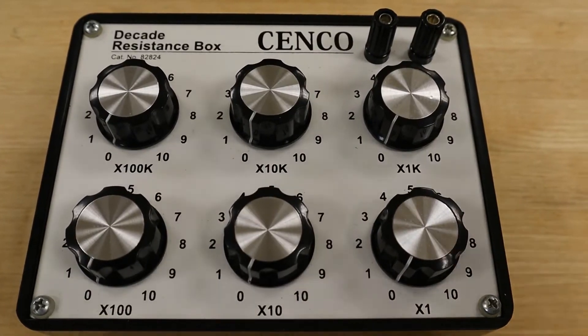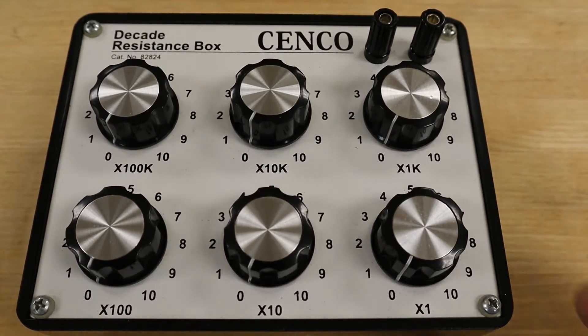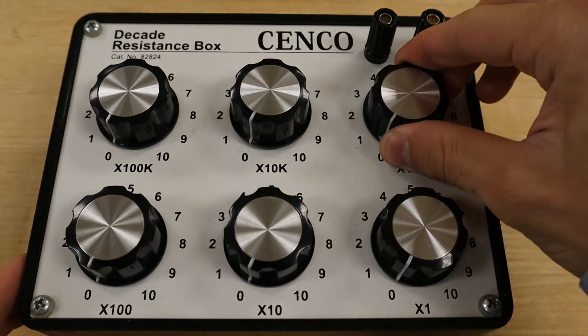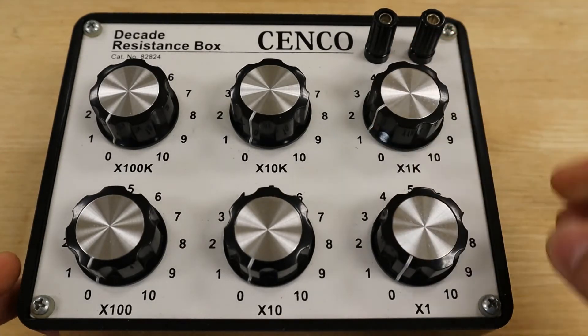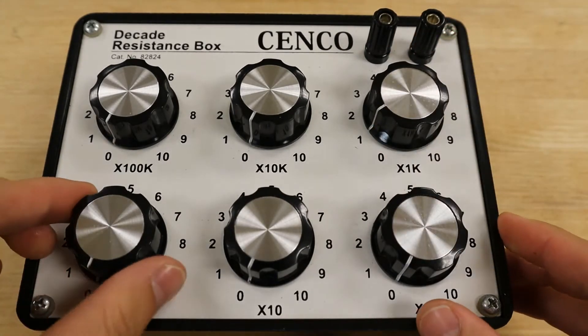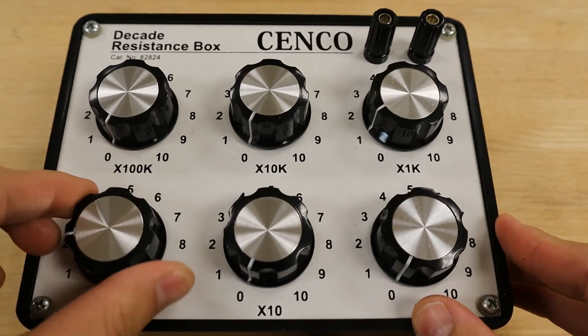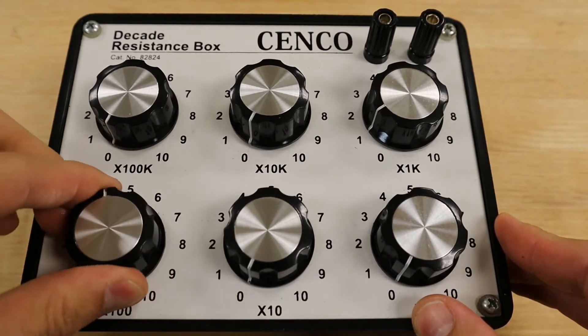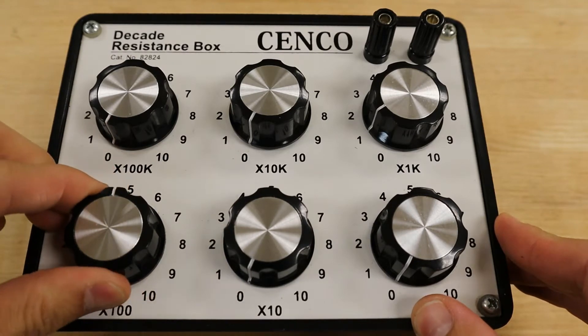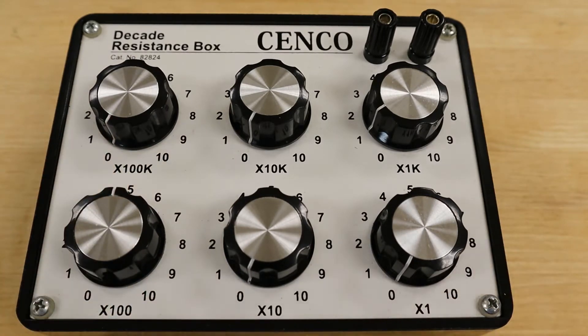In this case, we'll set the decade resistor to 1.5 kilohms by rotating the 1000 decade knob, denoted by 1k, to 1 and the 100 decade knob to 5. Since 1000 plus 500 is the same as 1.5 times 10 to the third, the correct resistive value is now available for use.